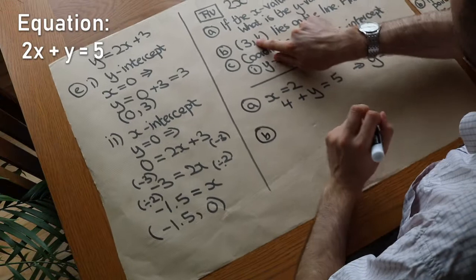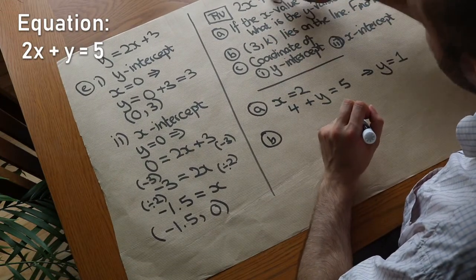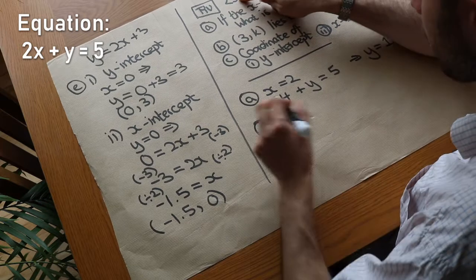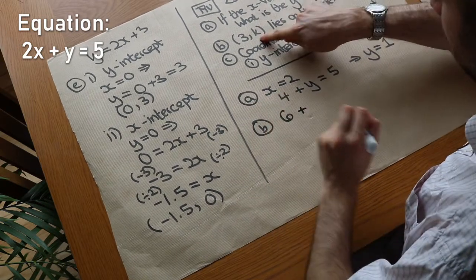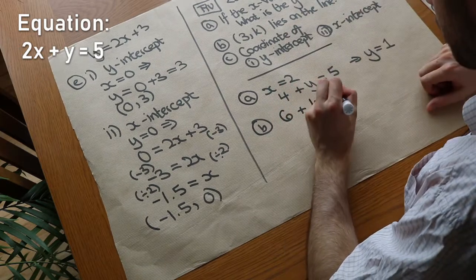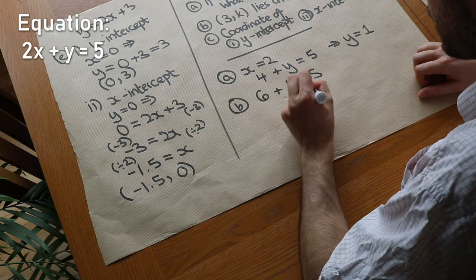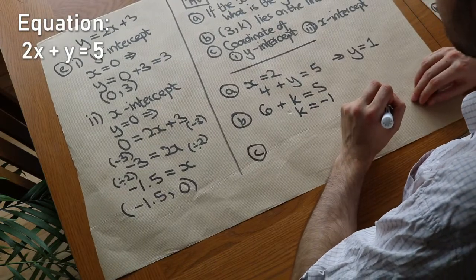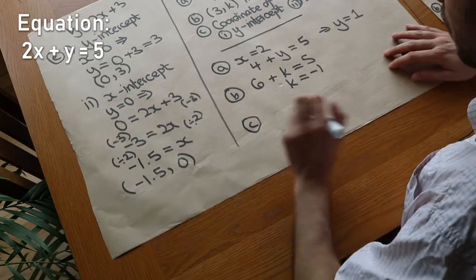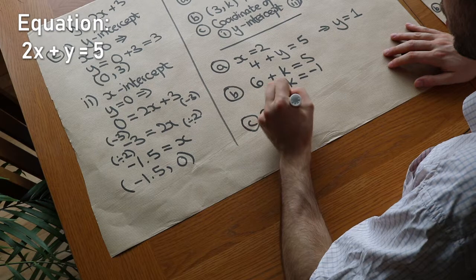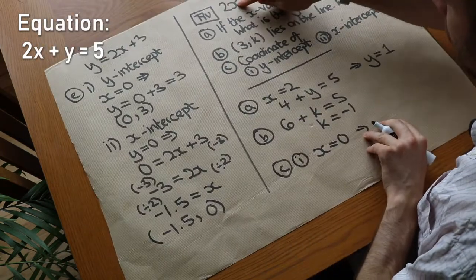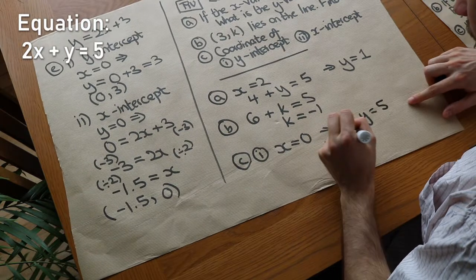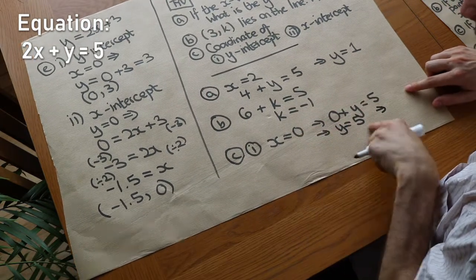For part b, the point 3, k lies on the line 2x plus y equals 5, so we substitute: 2 times 3 is 6, plus k equals 5. Subtracting 6 from both sides gives k equals −1. For the y-intercept of this line, we make x equal to 0. Then 2 times 0 plus y equals 5, so y equals 5, giving the coordinate 0, 5.